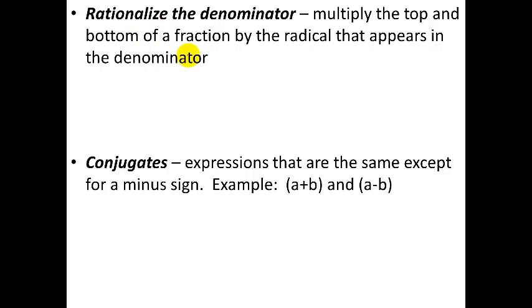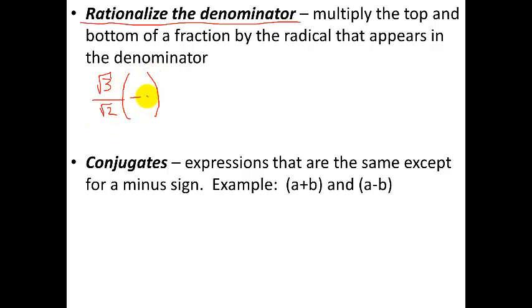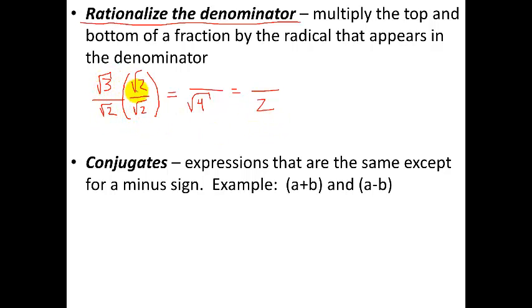If you have radicals in the denominator, you have to rationalize the denominator — you multiply the top and bottom of a fraction by the radical that appears in the denominator. For example, if you have square root of 3 over square root of 2, you multiply the entire thing by square root of 2 over square root of 2. Square root of 2 times square root of 2 gives square root of 4, which is just 2. In the numerator, square root of 3 times square root of 2 is the square root of 6, which cannot be simplified. So square root of 6 over 2 is your simplest form.